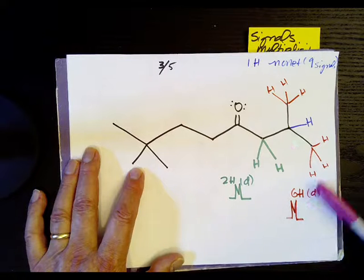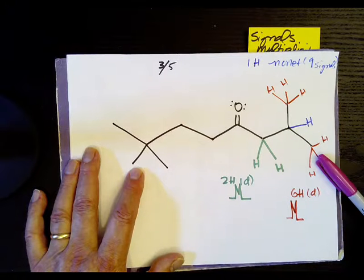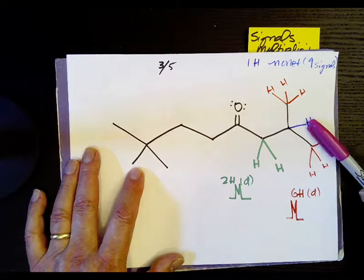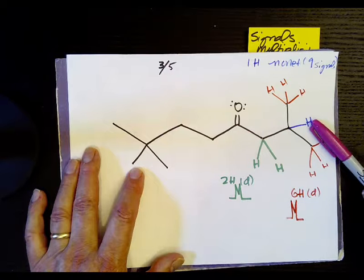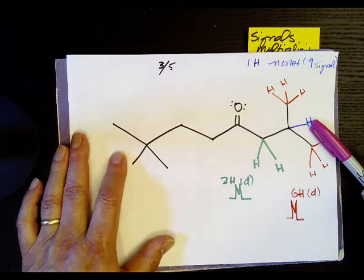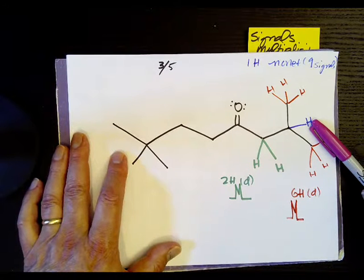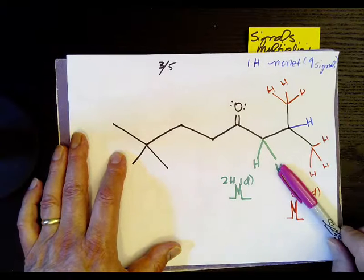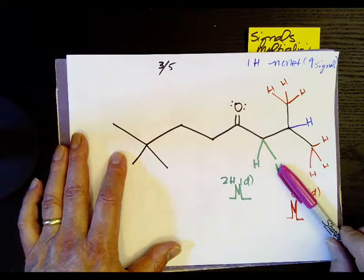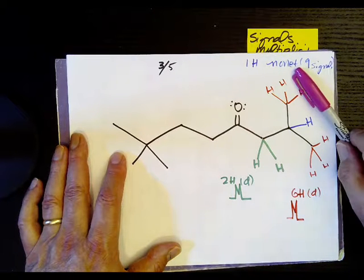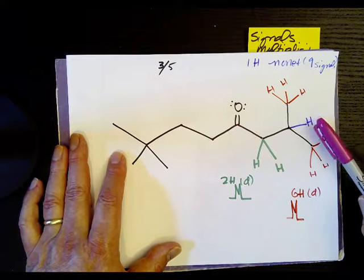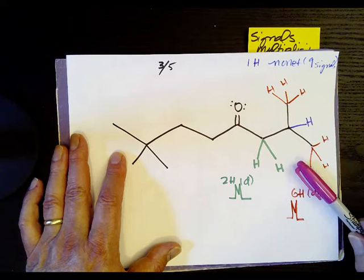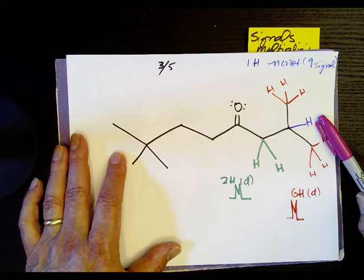Now this hydrogen here has many, many protons and hydrogen next to them. We have the six and we have the two is eight plus one is nine. You haven't learned the name yet, but it's a nonet. So that means this small proton here, you're going to split into nine peaks.